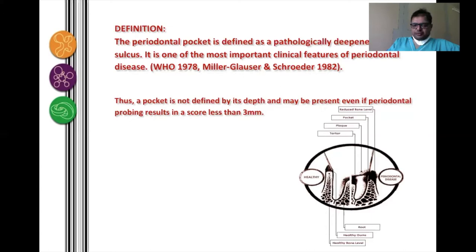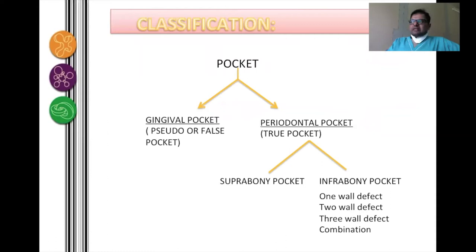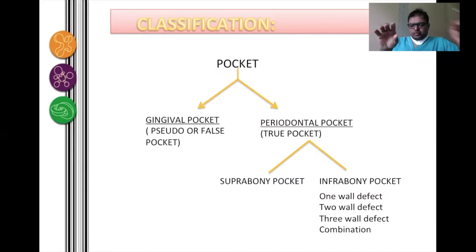Periodontal pockets are classified into two sections: a gingival pocket and a periodontal pocket. A gingival pocket is also known as a pseudo or false pocket, while the true pocket is also known as a periodontal pocket proper. The periodontal pocket can be further subdivided into a suprabony pocket and an infrabony pocket.